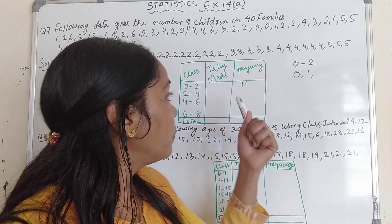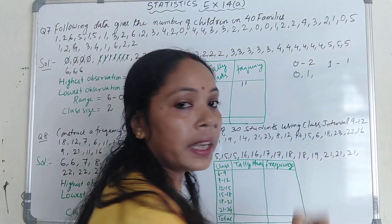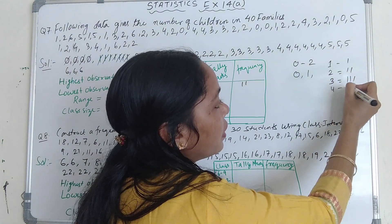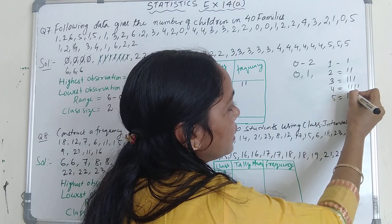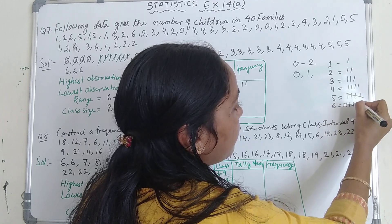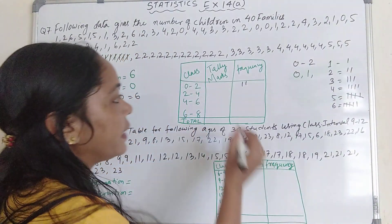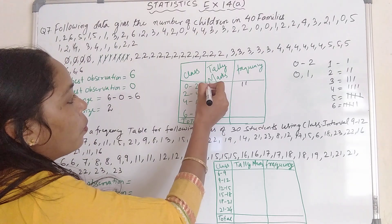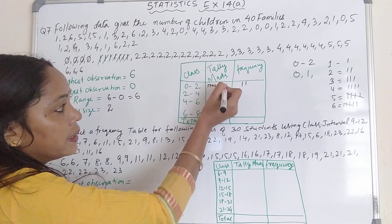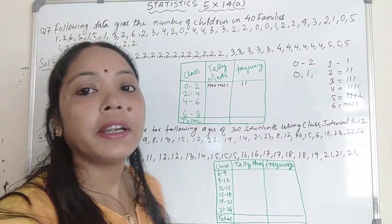Now we have to write this frequency using tally marks. For tally marks: 1 is a single line, 2 is two lines, 3 is three lines, 4 is four lines, and 5 is four lines with a cut across them. For frequency 11, we write: five lines with a cut (that's 5), then another five with a cut (that's 10), then one more line — so 5 plus 5 is 10, plus 1 is 11. This is our tally mark for 11.